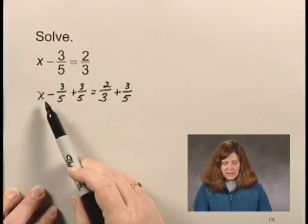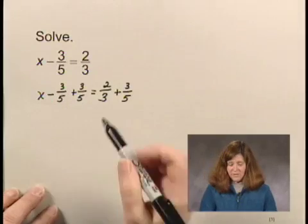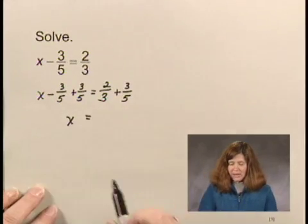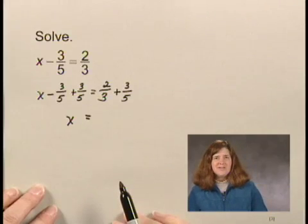Now, x minus 3 fifths plus 3 fifths is simply x, and that equals 2 thirds plus 3 fifths.